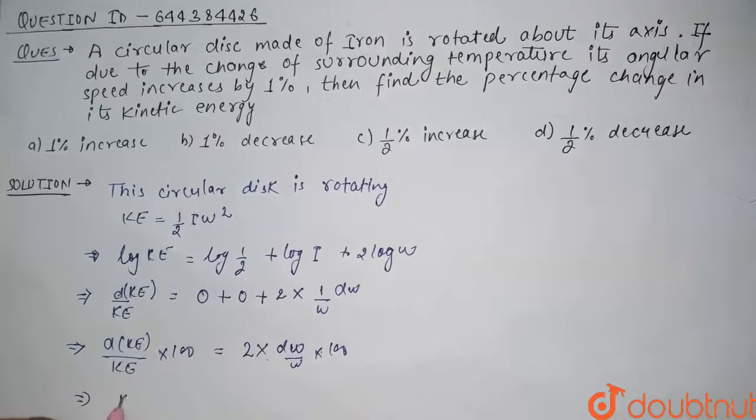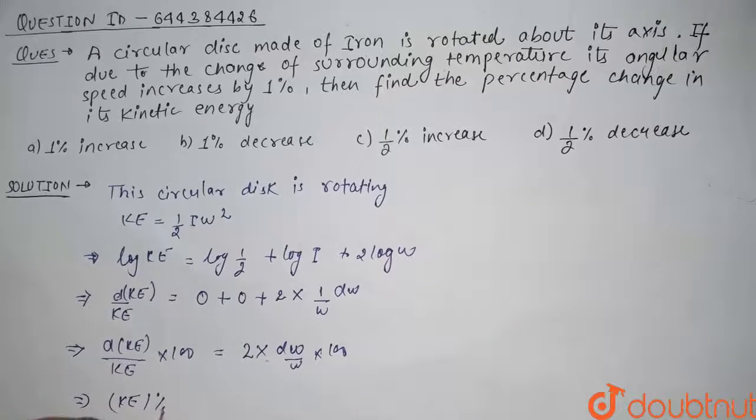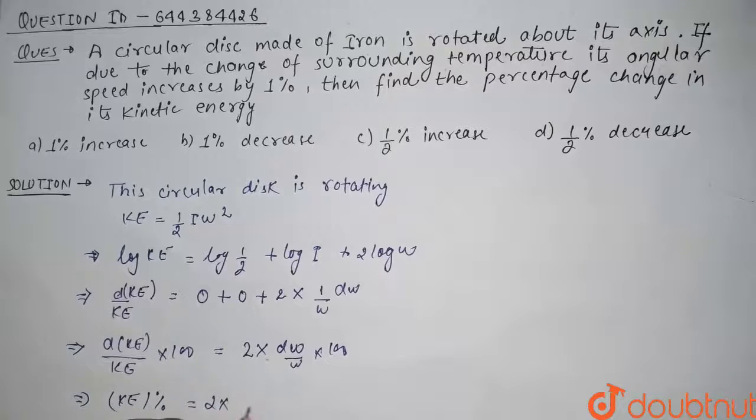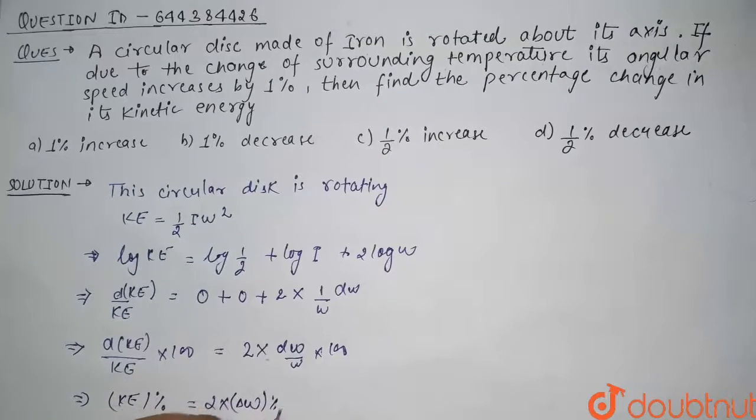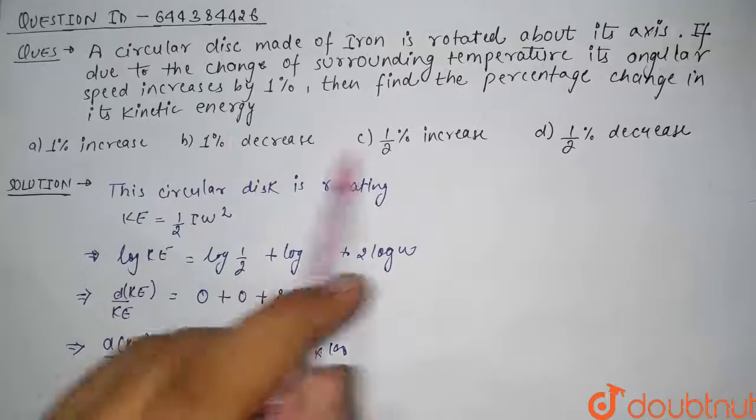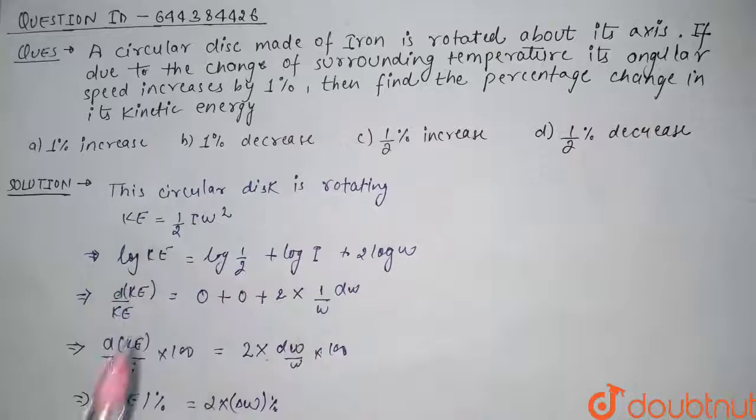So this comes out to be kinetic energy percentage equals 2 into delta omega by omega. Now we have been given that the angular speed increases by 1 percent.